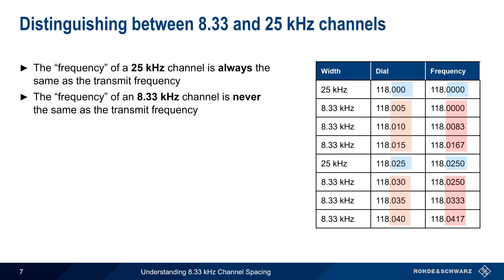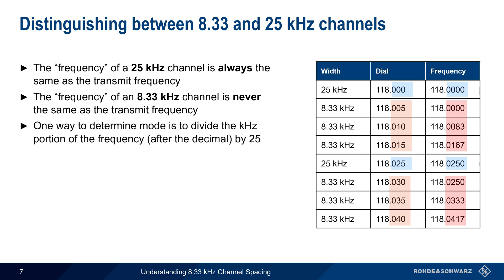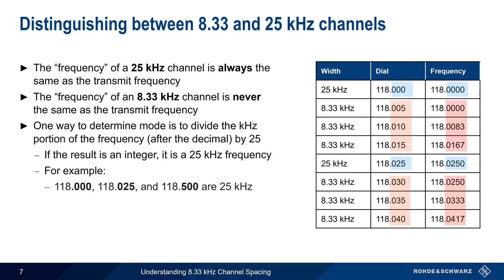One easy way to determine which channel spacing is being used is to divide the kHz, or decimal portion, of the frequency by 25. If the result is an integer, then the frequency is a 25 kHz frequency. For example, 118.000, 118.025, and 118.500 are all 25 kHz channels, whereas 118.005, 118.010, and 118.015 are all 8.33 kHz channels.